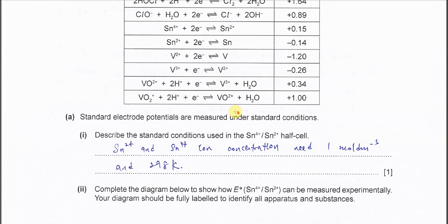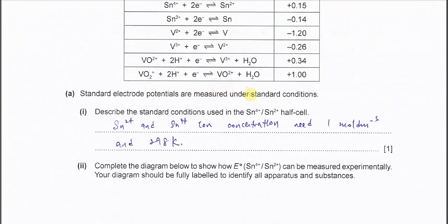Part A, Part 1. Standard electrode potentials are measured under standard conditions. Describe the standard conditions used in the Sn4+/Sn2+ half cell. The standard condition for this ion-ion couple: first, the concentration must be the standard concentration. In electrochemistry, standard concentration is always one mole per dm³. So the Sn2+ and Sn4+ ion concentrations must be one mole per dm³, and of course temperature must be 298 Kelvin.